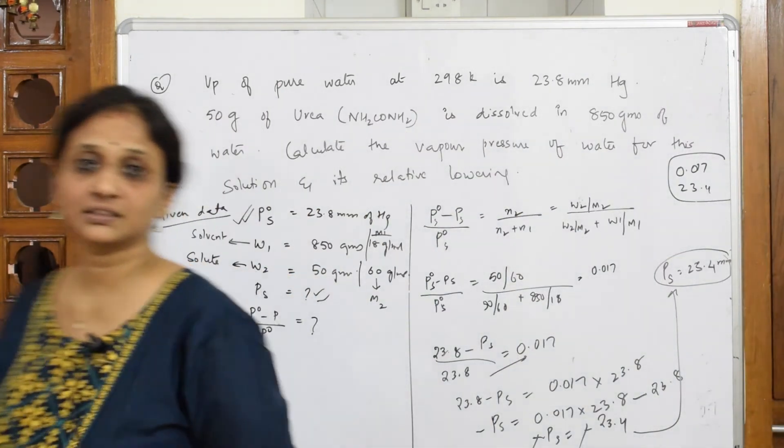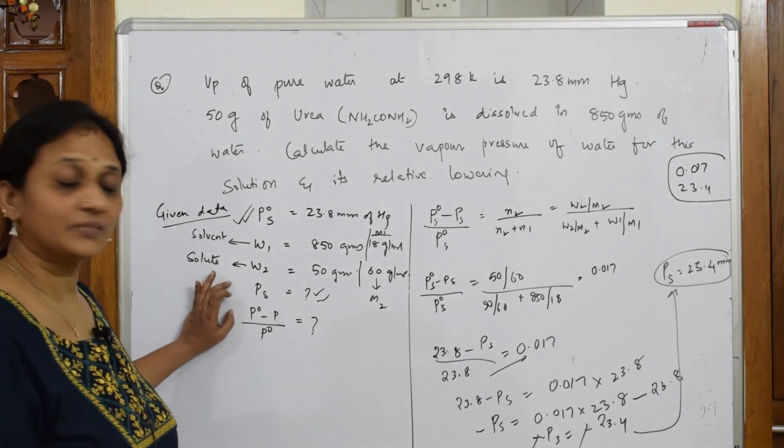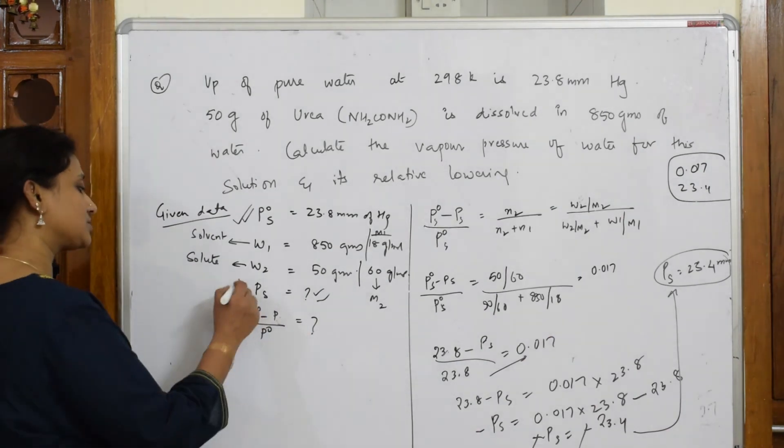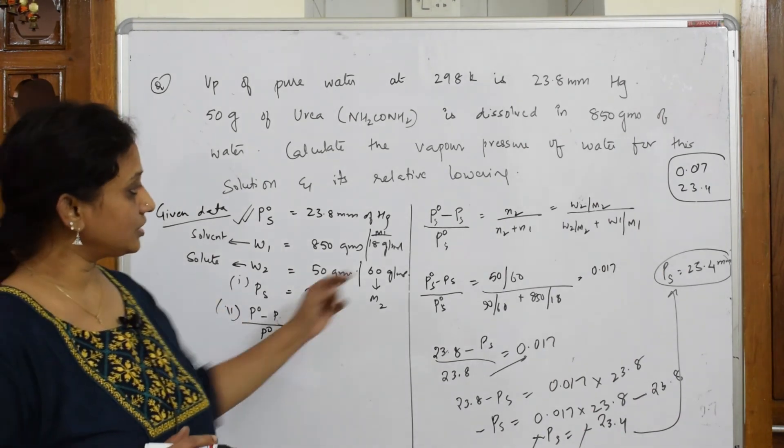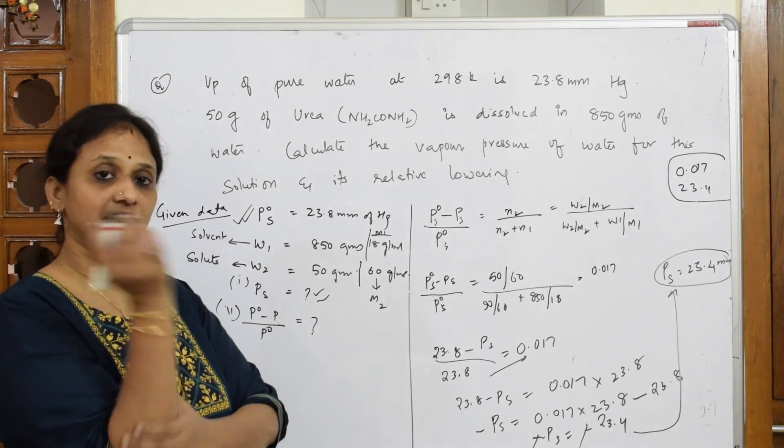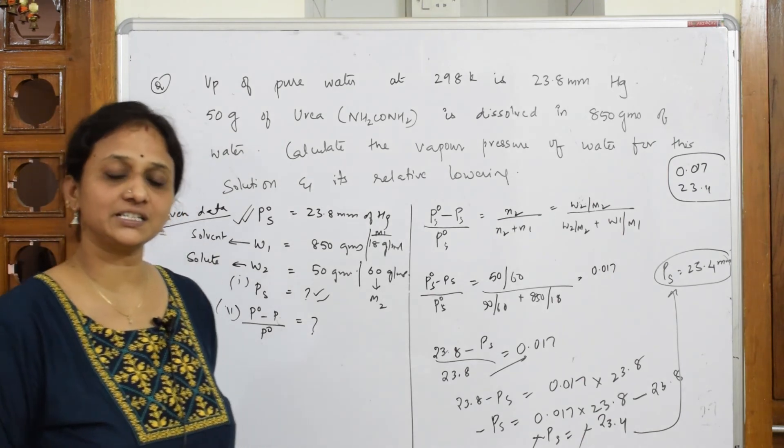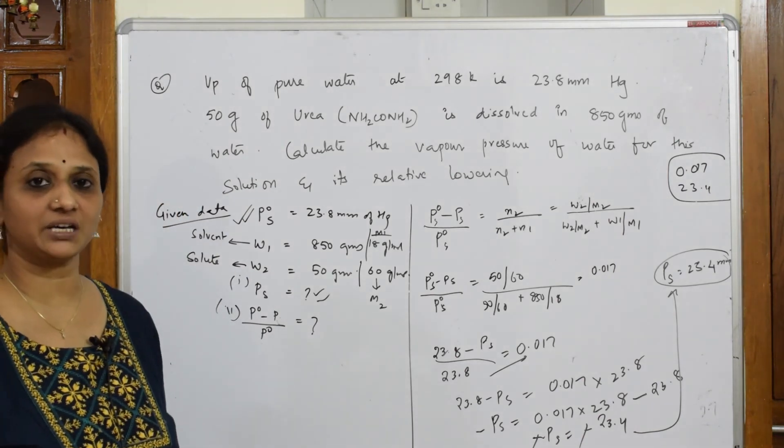Minus and minus gets cancelled, and I get an answer of vapor pressure 23.4 mm. Observe carefully what did I do. Yes, I first basically wrote the given data, then I have written what to find out - this is to find out, this also to be found. After that I have written a formula, right?